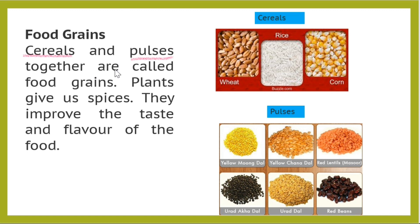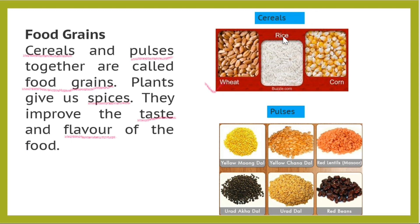Now, food grains. Grains are types of grass that produce seeds that are eaten. Cereals and pulses together are called food grains. Grains are also called cereals. Here you can see cereals like wheat, rice, and corn.